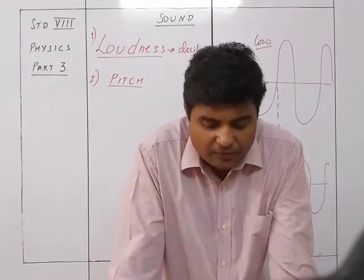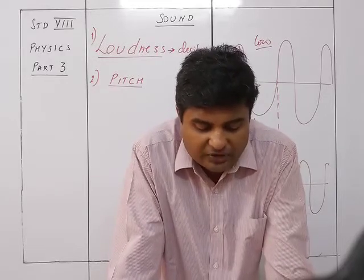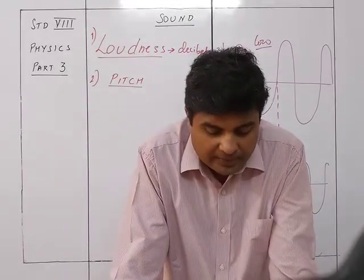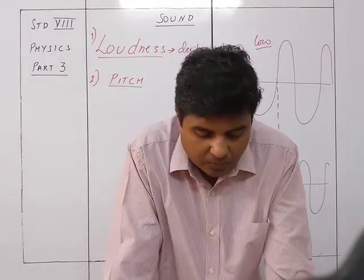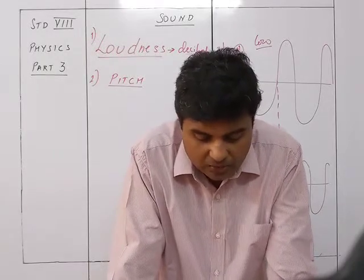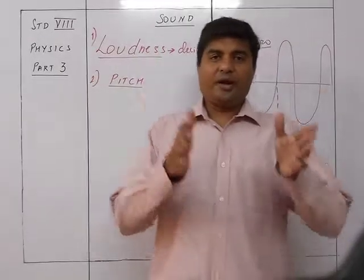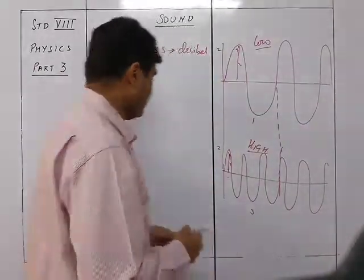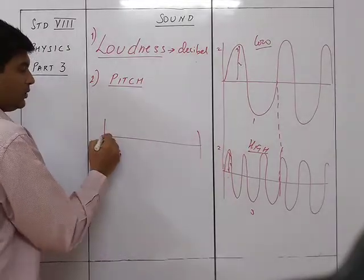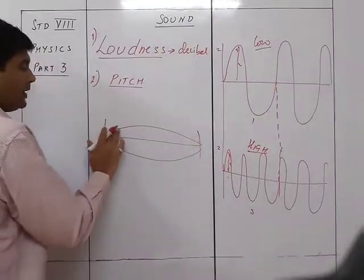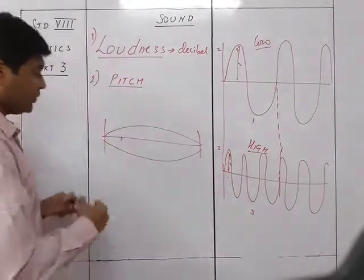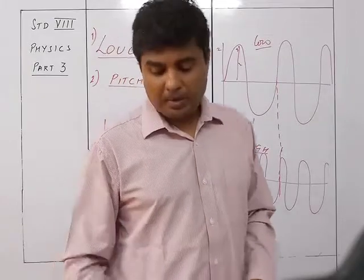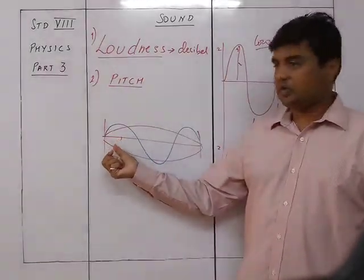Take a steel wire of length 0.5 meters stretched between two fixed supports under tension. Pluck the wire at the middle — it will vibrate in one loop. Now pluck the wire at one-fourth of its length from one end — it will vibrate with two loops, and the sound will be shriller than before because the frequency is higher.